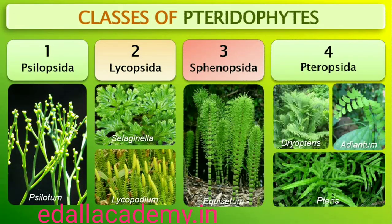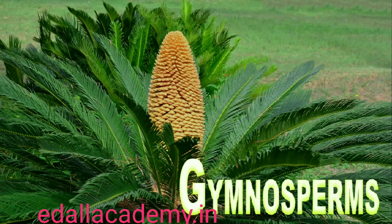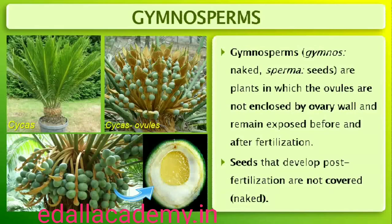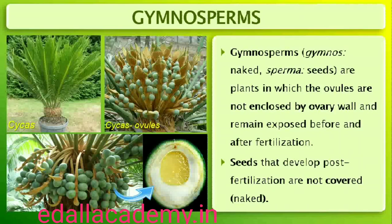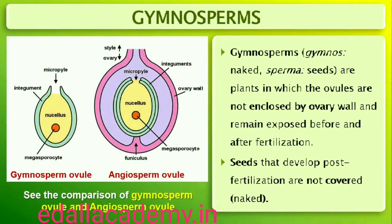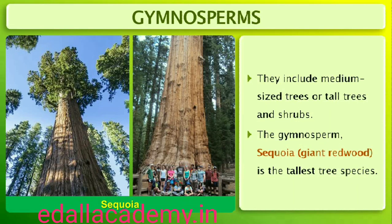Gymnosperms (gymnos: naked; sperma: seeds) are plants in which the ovules are not enclosed by any ovary wall and remain exposed both before and after fertilization. The seeds that develop post-fertilization are not covered, i.e., are naked. Gymnosperms include medium-sized trees or tall trees and shrubs. One of the gymnosperms, the giant redwood tree Sequoia, is one of the tallest tree species.